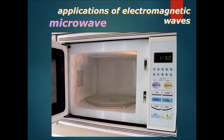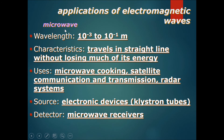The second to last one is called the microwave. Microwave is most famously used in the microwave oven. The wavelength of microwaves is from 10 to the power of minus 3 to 10 to the power of minus 1 meters.